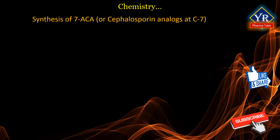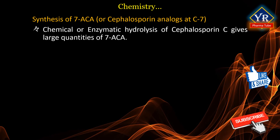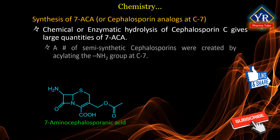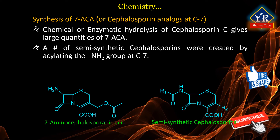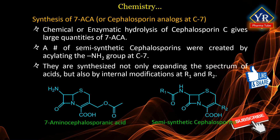Synthesis of 7-ACA or cephalosporin analogues at C7: chemical or enzymatic hydrolysis of cephalosporin C allows obtaining large quantities of 7-ACA. A number of semisynthetic beta-lactam cephalosporin antibiotics were created by acylating the amino group of cephalosporin C with various acid derivatives — analogous to the semisynthetic penicillin series — and currently there are about 25,000 of them, of which about 100 are used in medicine. Unlike penicillins, semisynthetic cephalosporins are synthesized not only by expanding the spectrum of acids by which 7-ACA is acylated, but also by internal modifications at R1 and R2 positions of the beta-lactam ring.